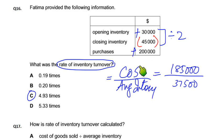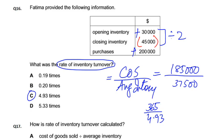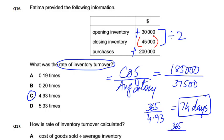Agar days mein nikalna ho to is formula ko ulta kar do: average inventory upon cost of sales, phir multiply karo 365. 365 divided by 4.933 = 74 days. Yeh aasan tarika hai — agar times hai aapke paas to days mein convert karna aasan hai. Aur agar aap days nikal chuke hain, 74 days, to times mein convert karne ke liye 365 divide by 74 kar do, times aa jayega — 4.933 times.